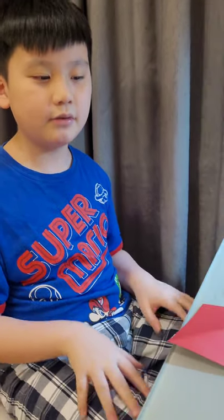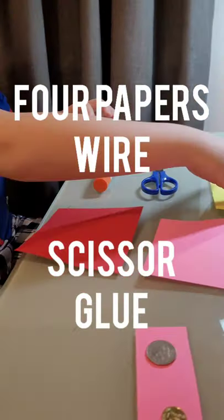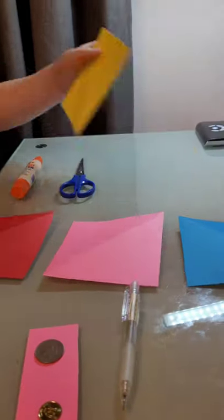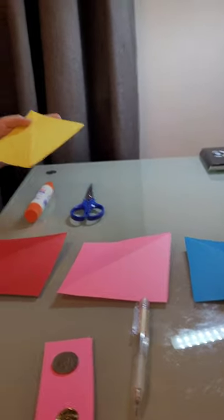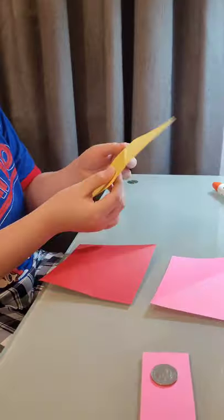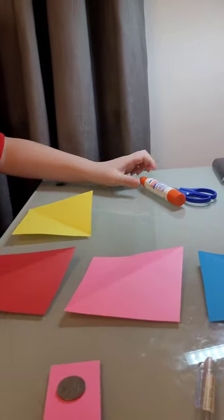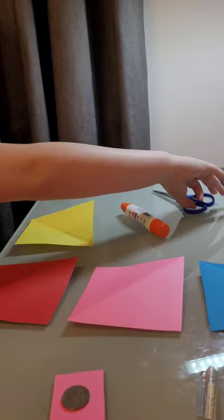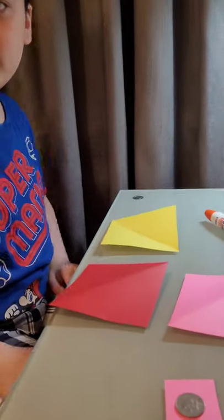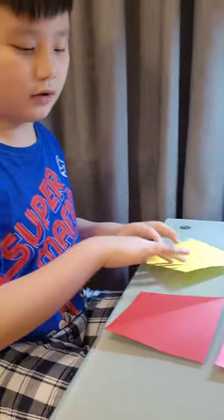We're going to make a paper windmill that you can move by blowing it, so let's start. First you need four paper squares, a pencil, glue, and scissors.